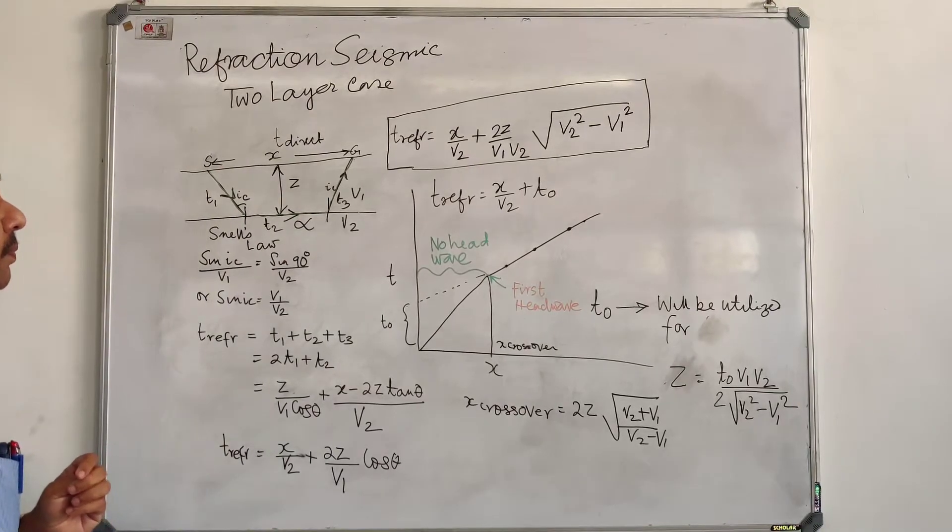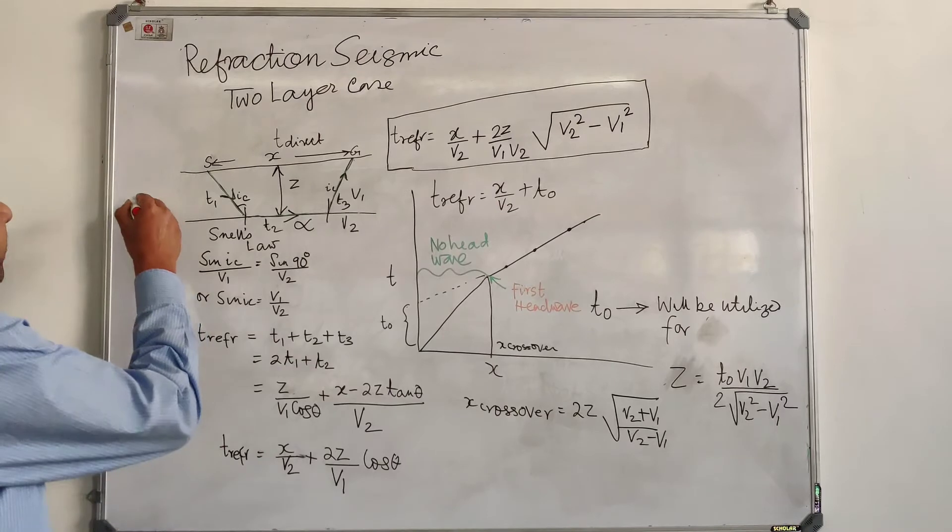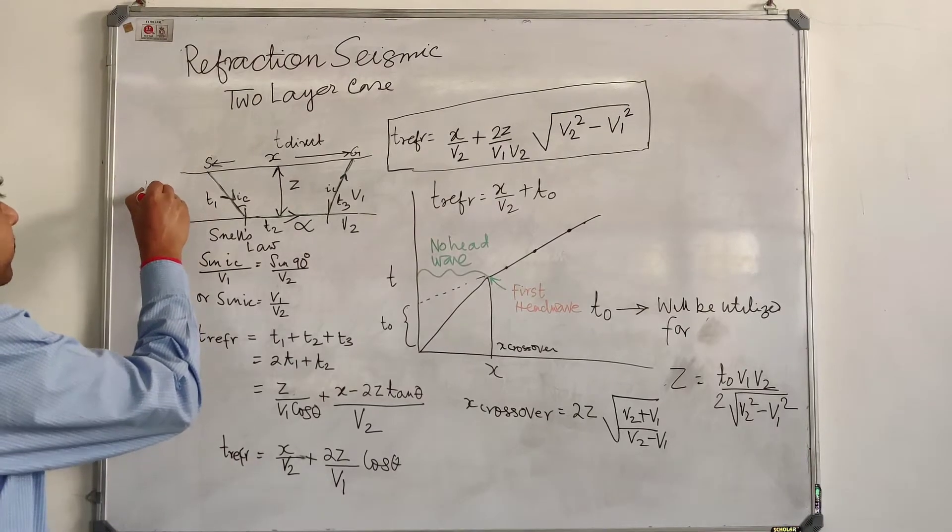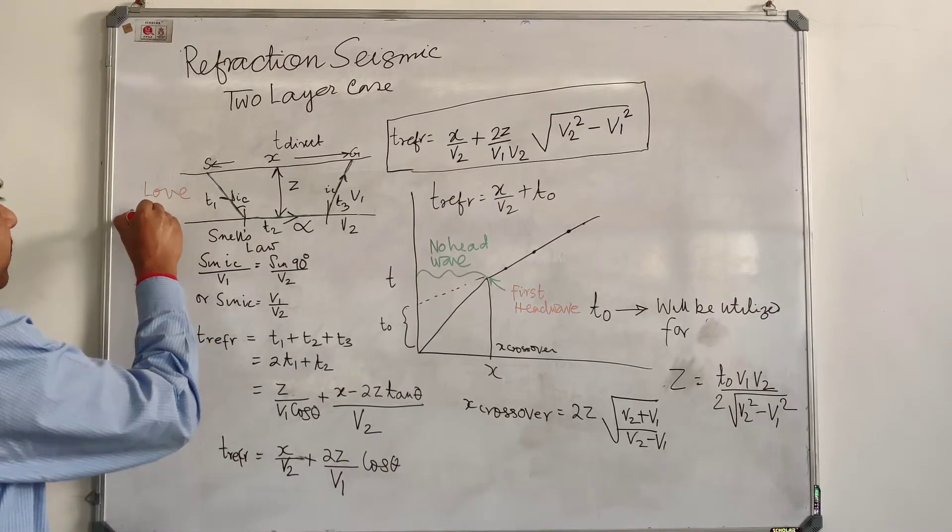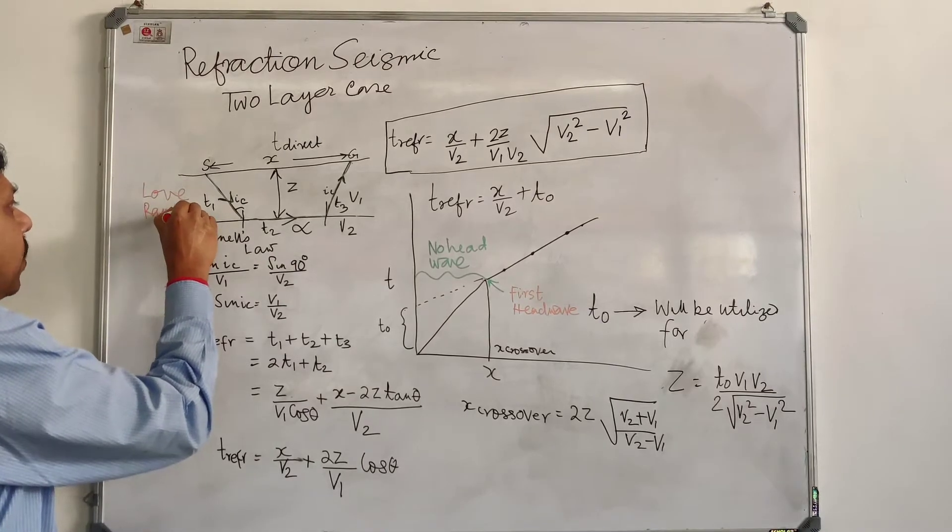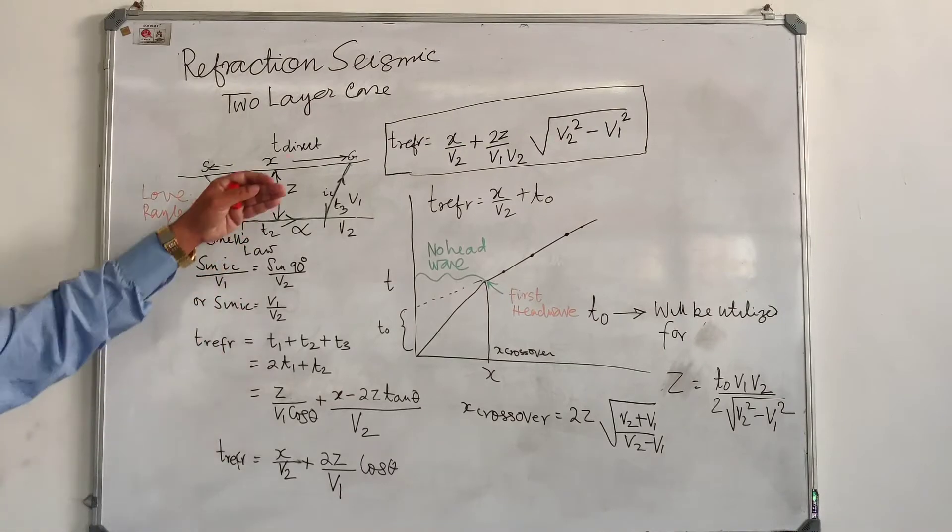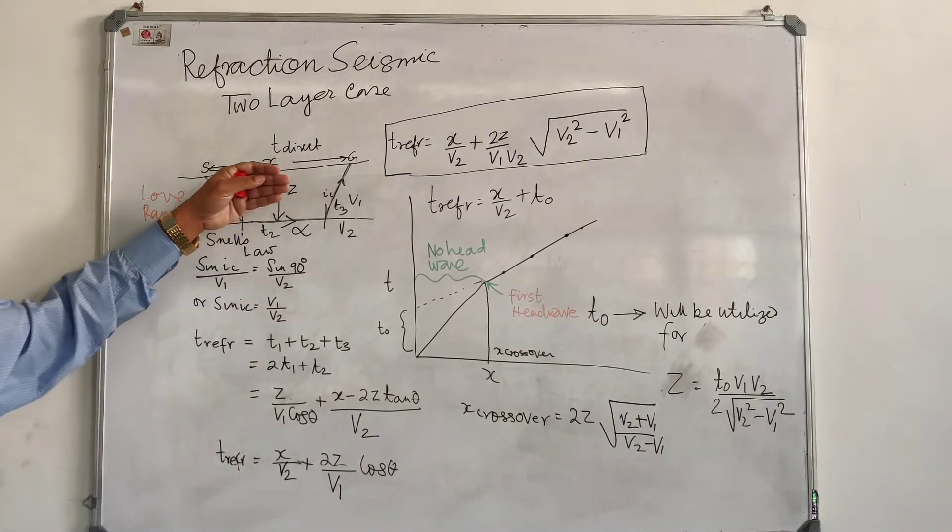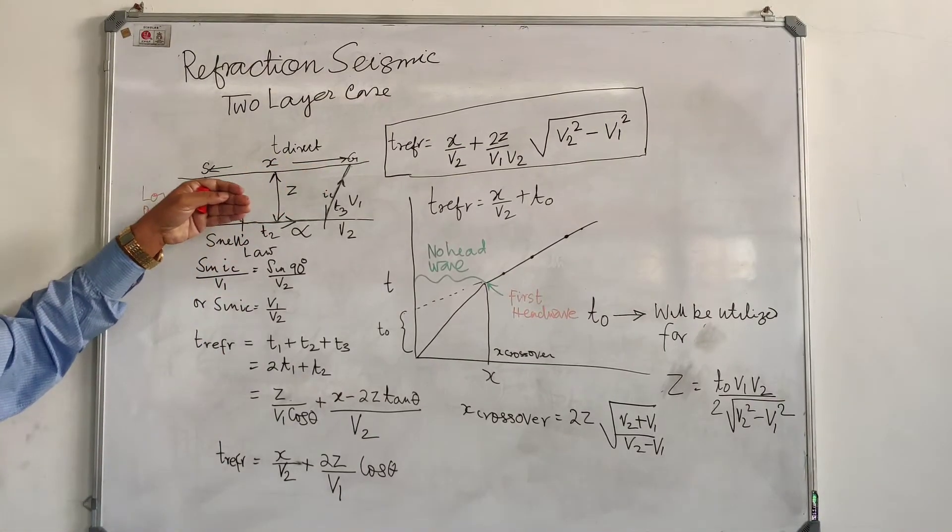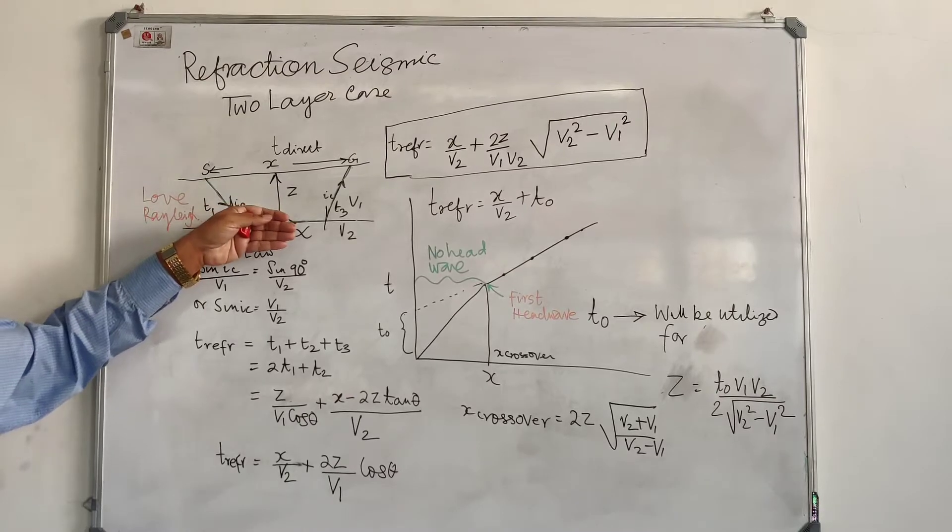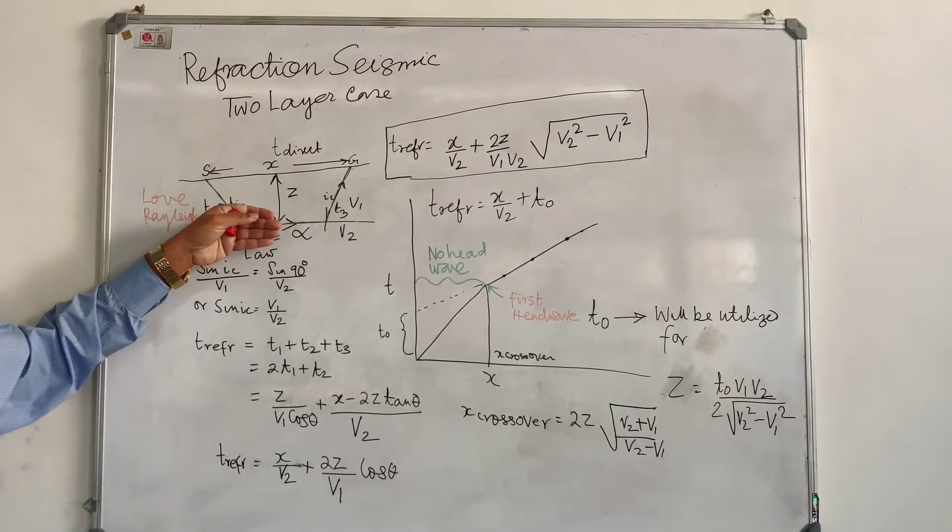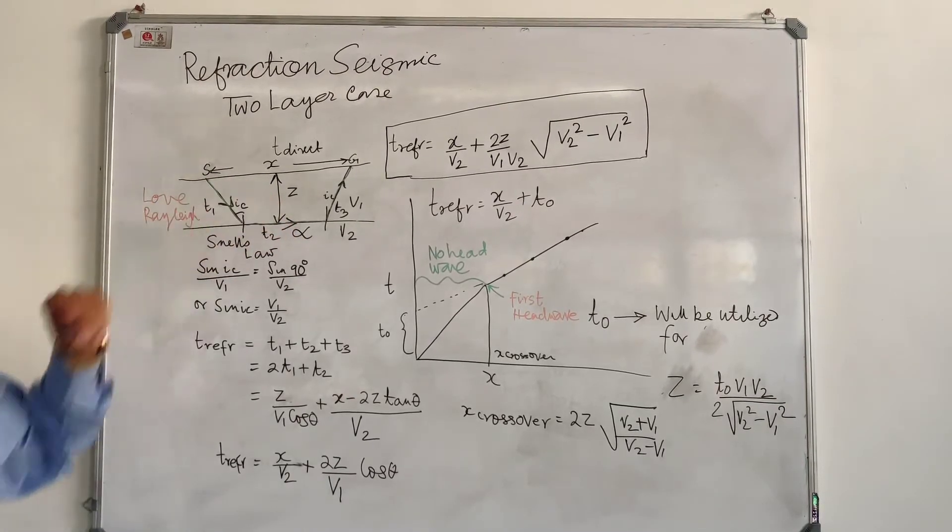We know that this is where the Love waves and Rayleigh waves are traveling. Two objectives are there. One objective is to understand the velocity in the LVZ. The second is to understand the velocity below the layer where the refraction has taken place.